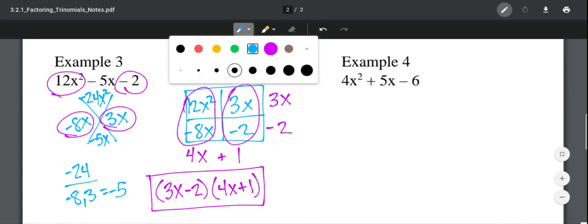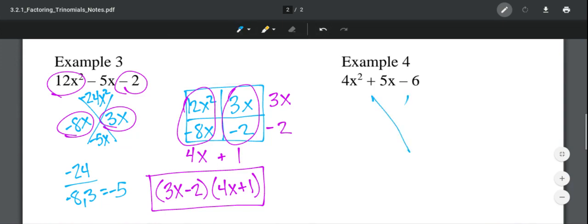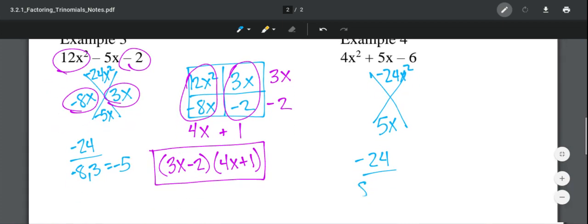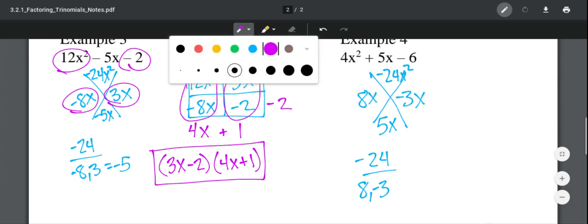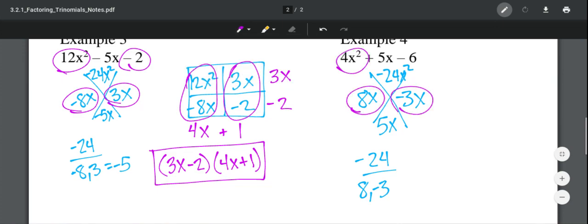Okay, one last one. Hopefully this will maybe be the glue that holds everything together. So this is negative 24x². 5x is on the bottom. Well, this is very similar number-wise, because you're trying to find 24, but you're finding positive 5 instead of negative 5. So the only difference is 8 and negative 3, not negative 8 and 3. So 8x, negative 3x.